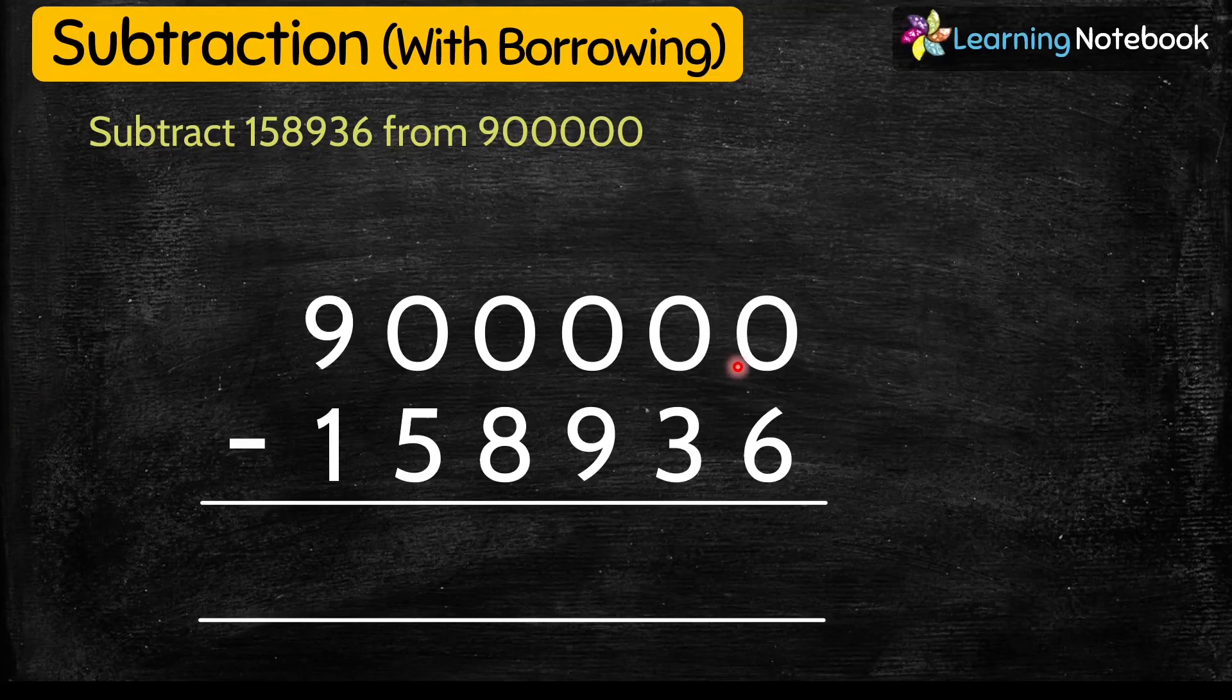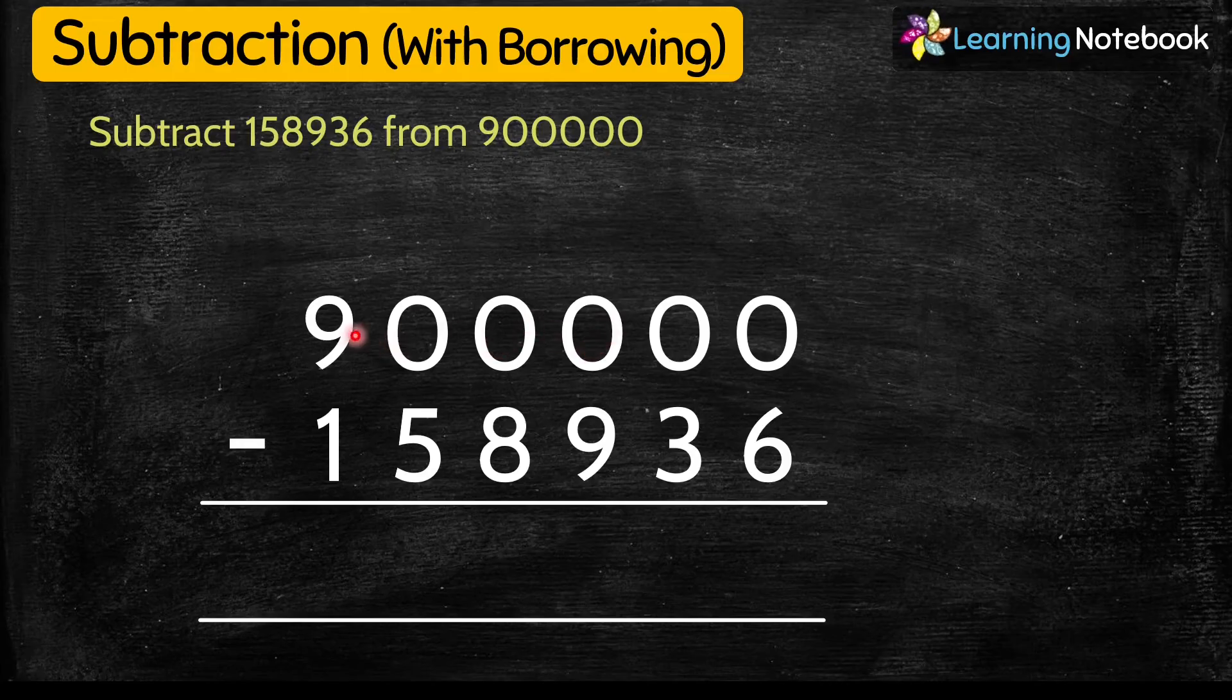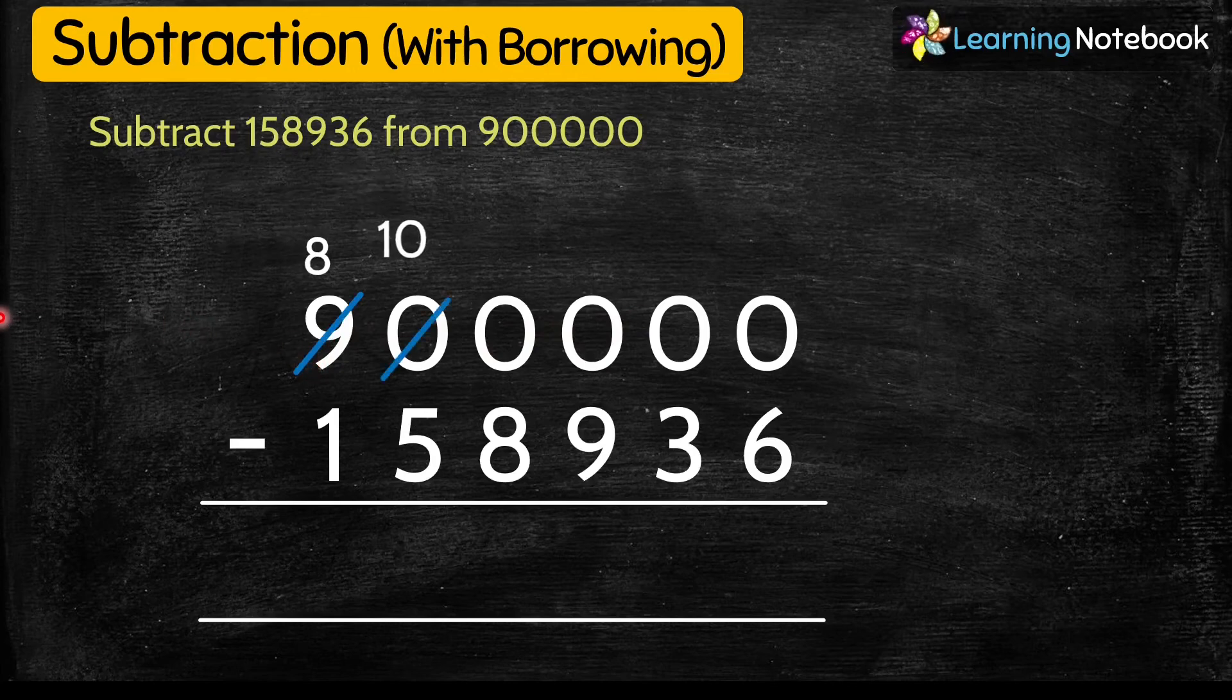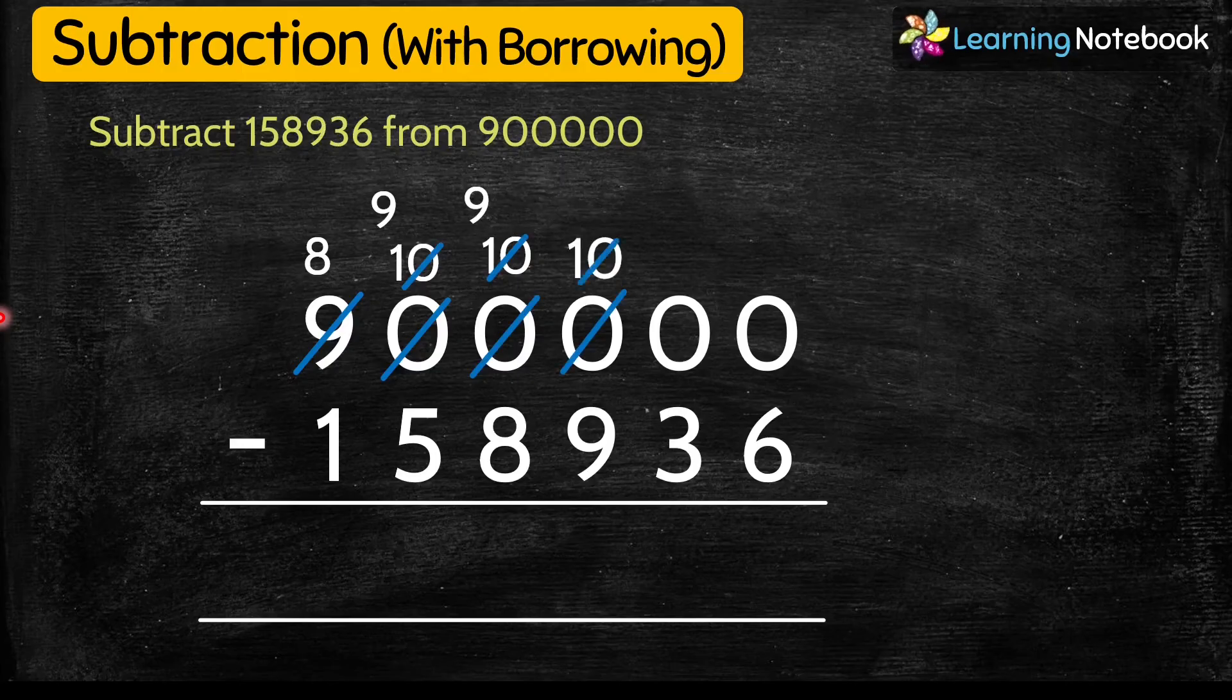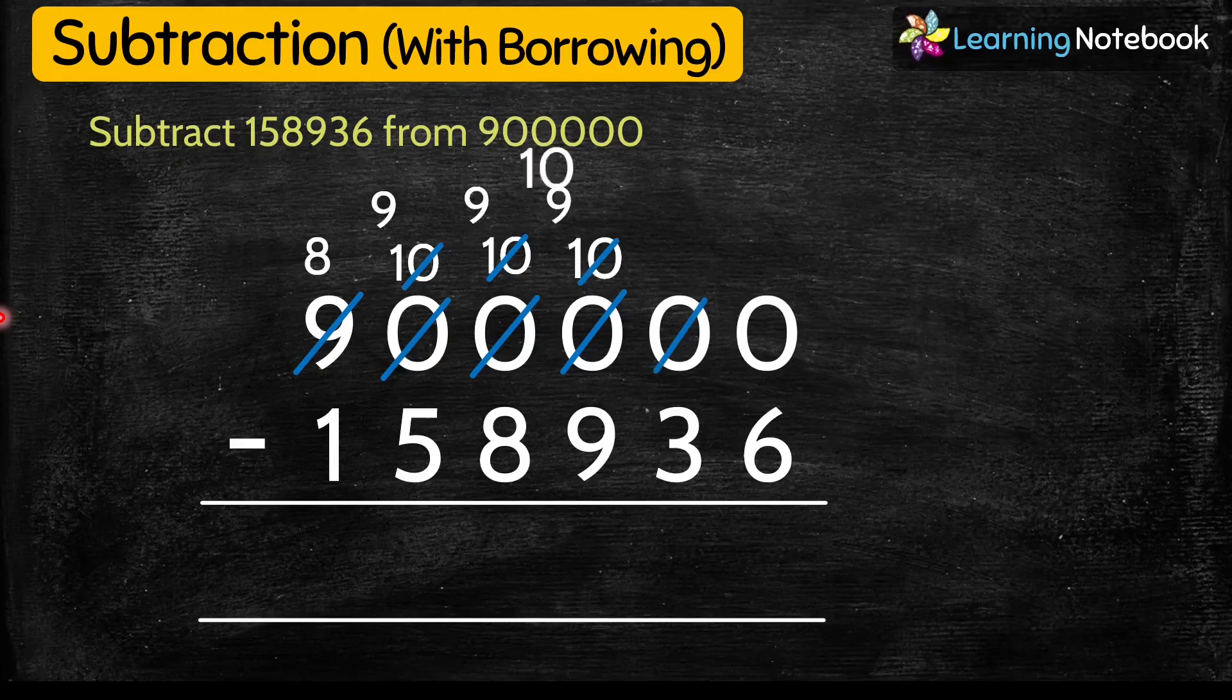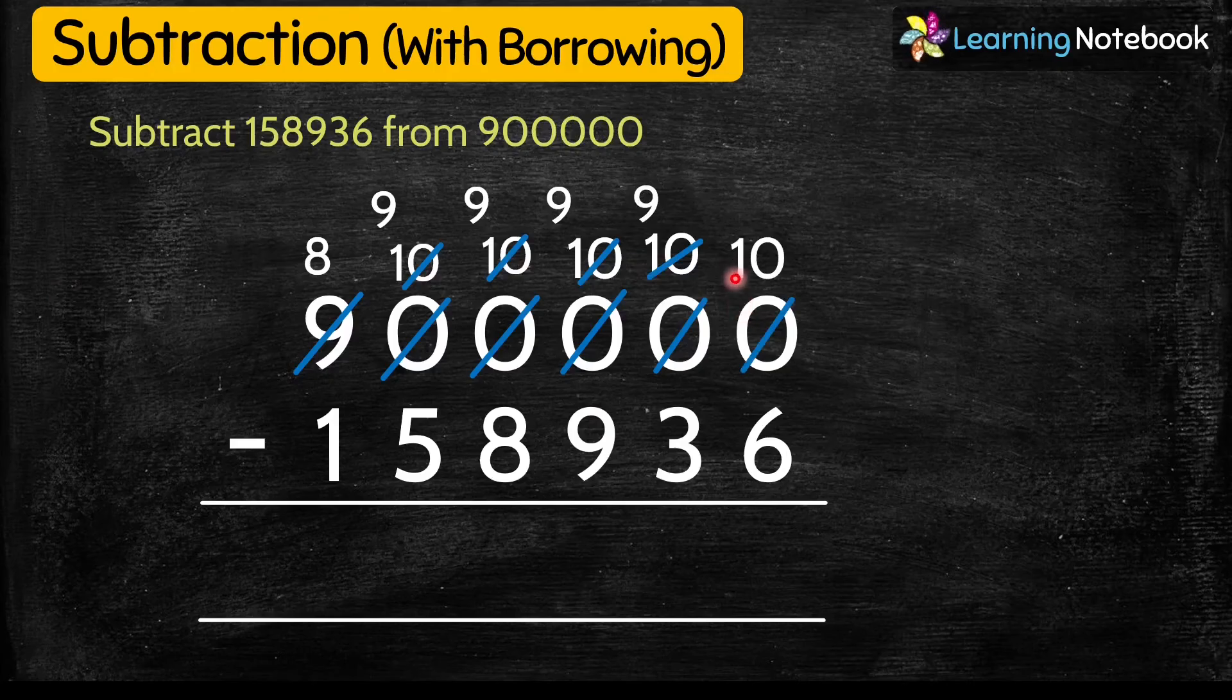But 0 is weaker than 6, so 0 borrows from 9. So 9 becomes 8 and this 0 becomes 10. And students, we will keep on borrowing until 0 at one's place becomes 10. So now finally, 0 at one's place have become 10. So we can subtract now.